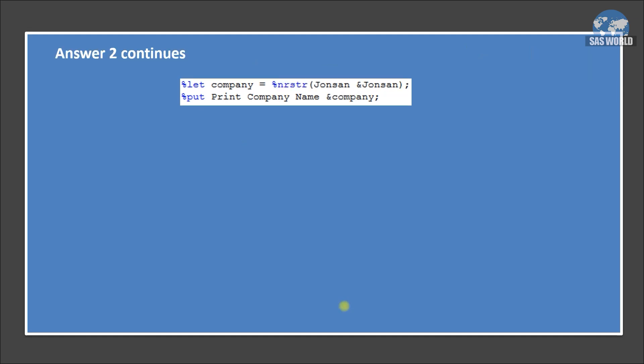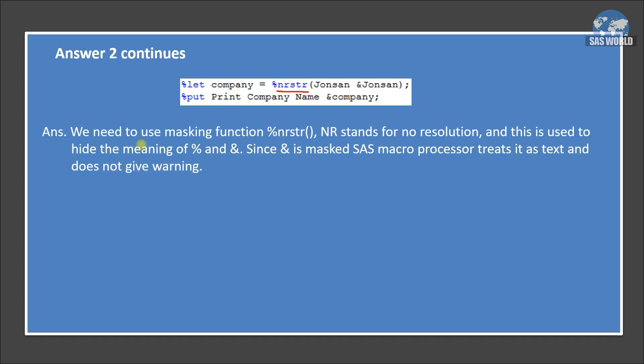So to remove those warnings, we need to use one another function that is called NRSTR. Let's understand this. So we need to use masking function percent NRSTR. NR stands for no resolution. So it will not resolve the macro variable's value. That is ampersand Johnson. And this is used to hide the meaning of percent and ampersand character. So it additionally hides two characters as compared to percent STR. Since ampersand is masked and SAS macro processor treats it as text and does not give warning. So now you understand that if we use percent NRSTR, we can mask or hide the meaning of ampersand character.